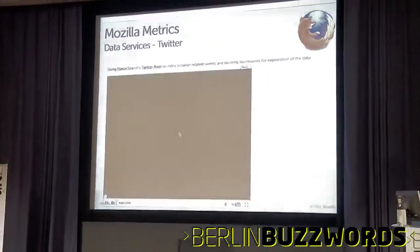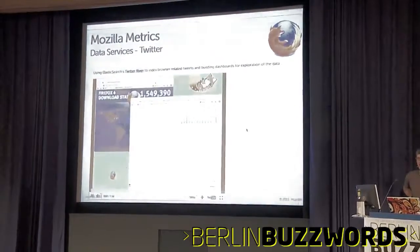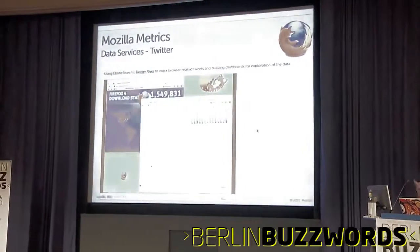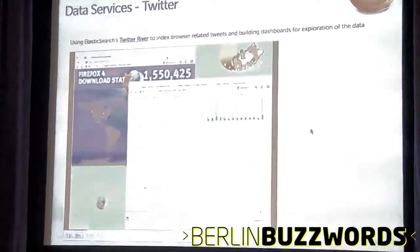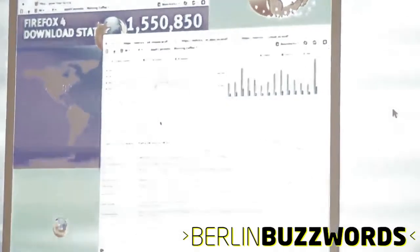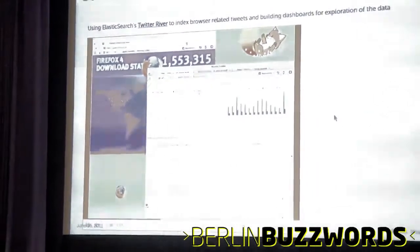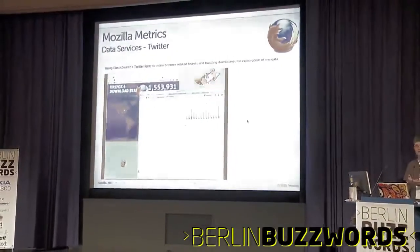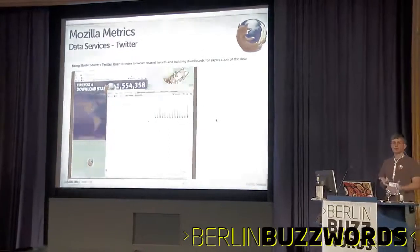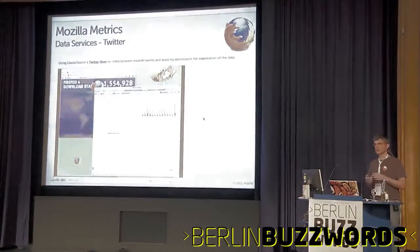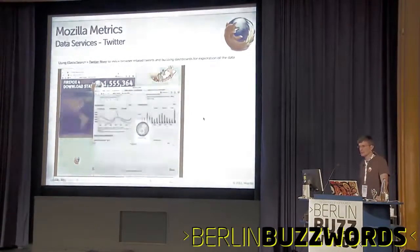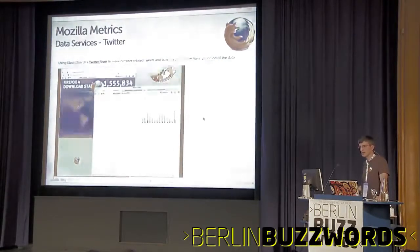On data services — one of the first things I wanted to mention is our Twitter data source. Elasticsearch has a system called Rivers, which are plug-ins that allow data to be pushed or pulled into the system continually. There's a Twitter river you can define with filters using the Twitter streaming API to have tweets flow into your Elasticsearch index. Mozilla has a Twitter river set up with filters for Mozilla-relevant keywords, Mozilla users on Twitter, and various other browser keywords. We use that data source to build dashboards and explore this data.